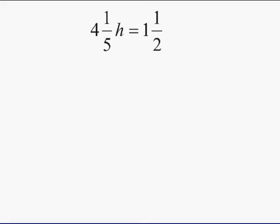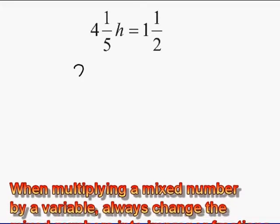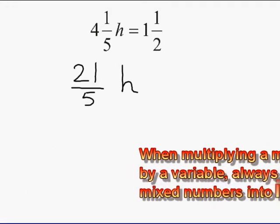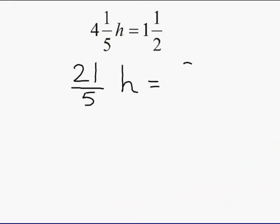Whenever you have an equation containing mixed numbers and you are multiplying them by a variable, change both mixed numbers into improper fractions. 4 and 1 fifth is equal to 21 over 5, and 1 and 1 half is equal to 3 over 2.